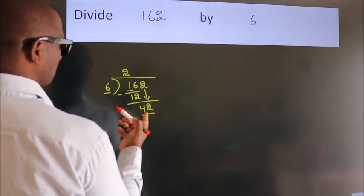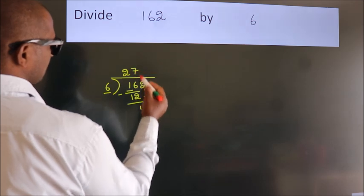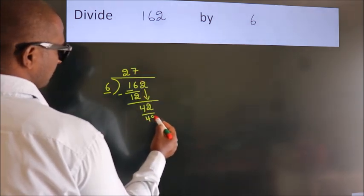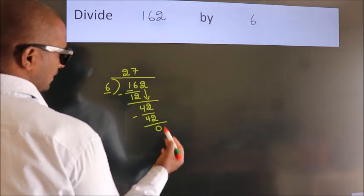When do we get 42? In 6 table, 6 7s, 42. Now we subtract, we get 0.